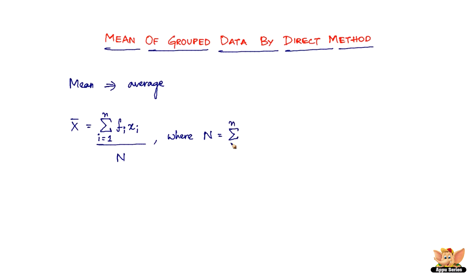Where N equals summation fi, that is nothing but the sum of all the frequencies. That's what is capital N. So we got this N, how do you find N?